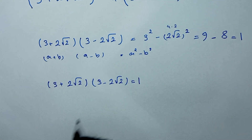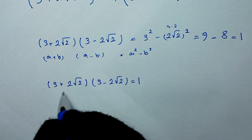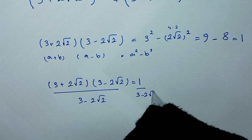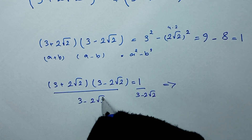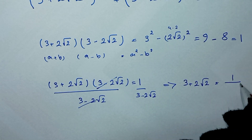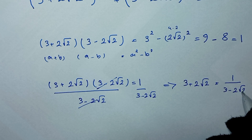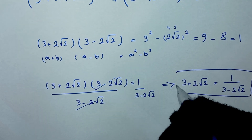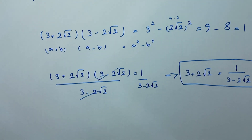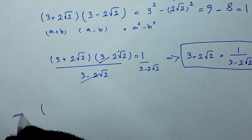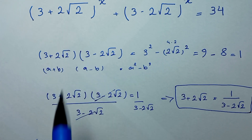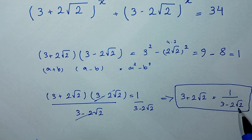If we divide both sides of this equation by (3 - 2√2), we get that 3 + 2√2 = 1 over (3 - 2√2). So we can rewrite 3 + 2√2 as 1/(3 - 2√2).